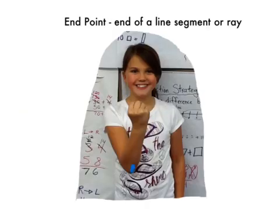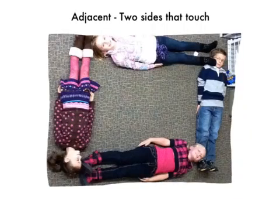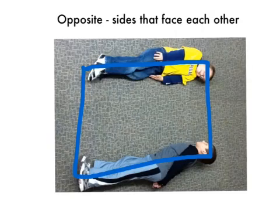An endpoint is the end of a line segment or a ray. A quadrilateral is a figure with four sides. Adjacent is two sides that touch. Opposite means sides that are facing each other.